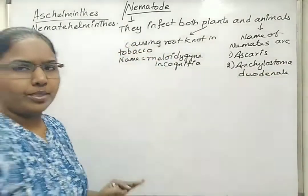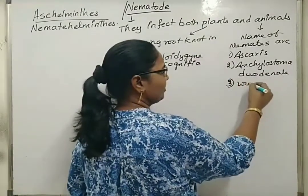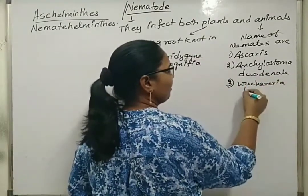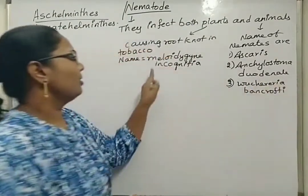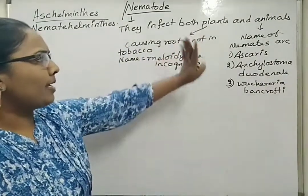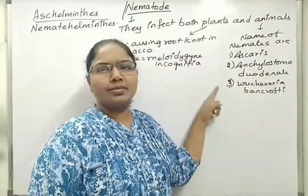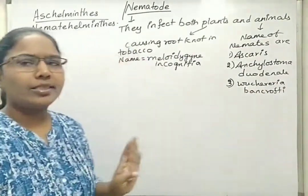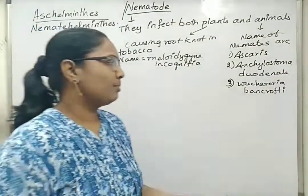The third example is Wuchereria bancrofti. We will also write the common names of these organisms. These three examples are given in your NCERT. Actually there are many nematodes, but according to the syllabus only three examples are mentioned.